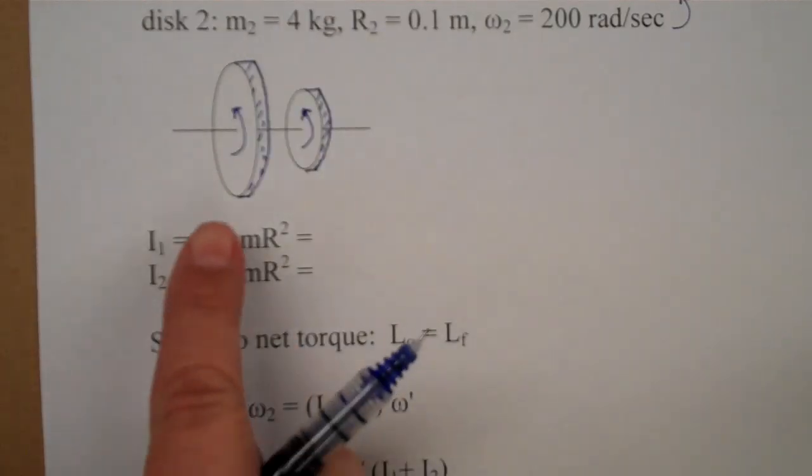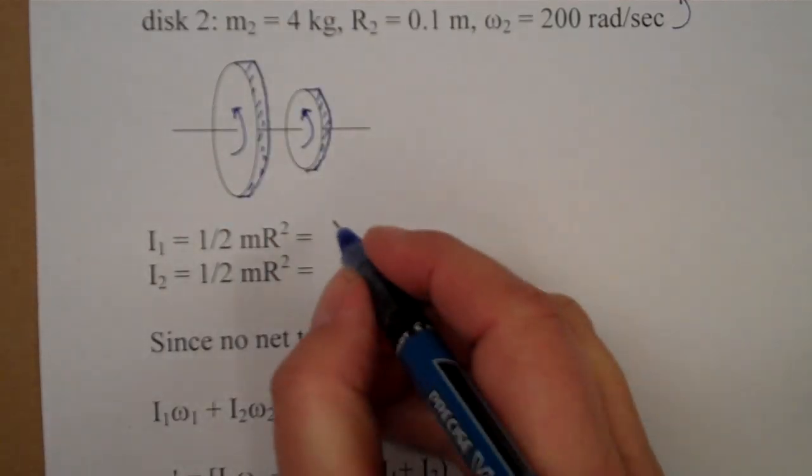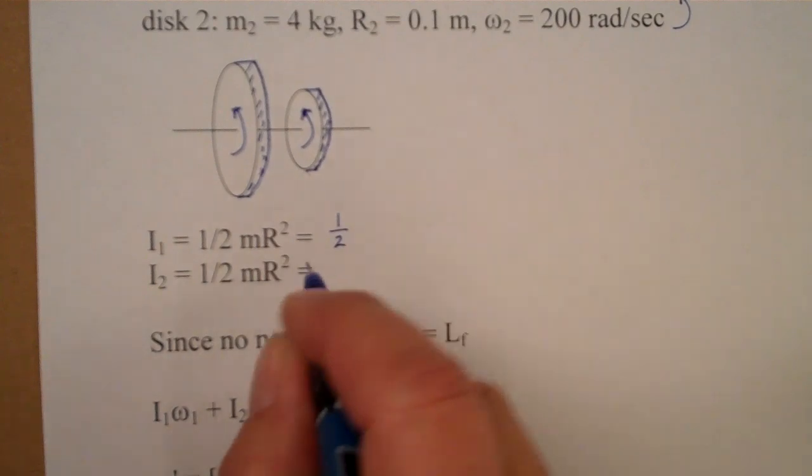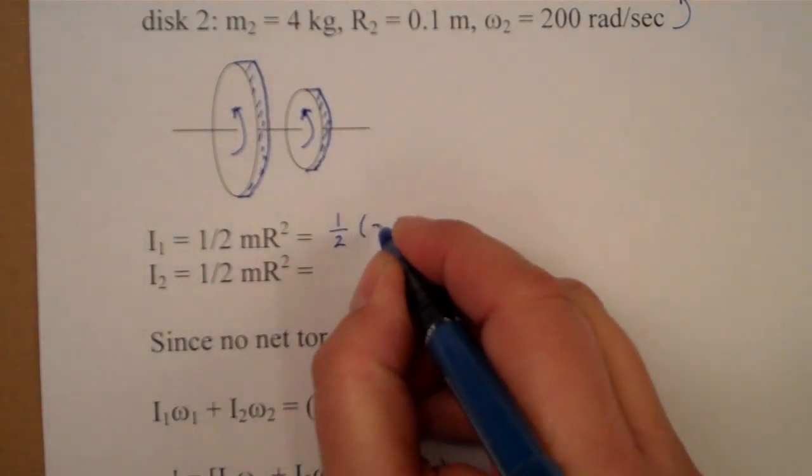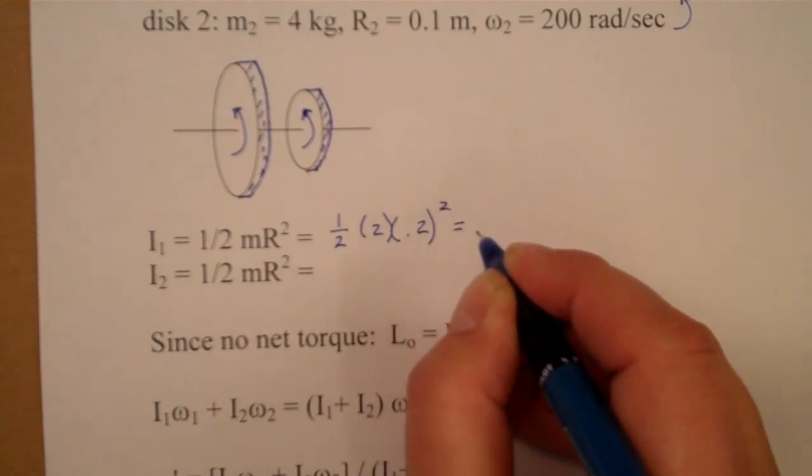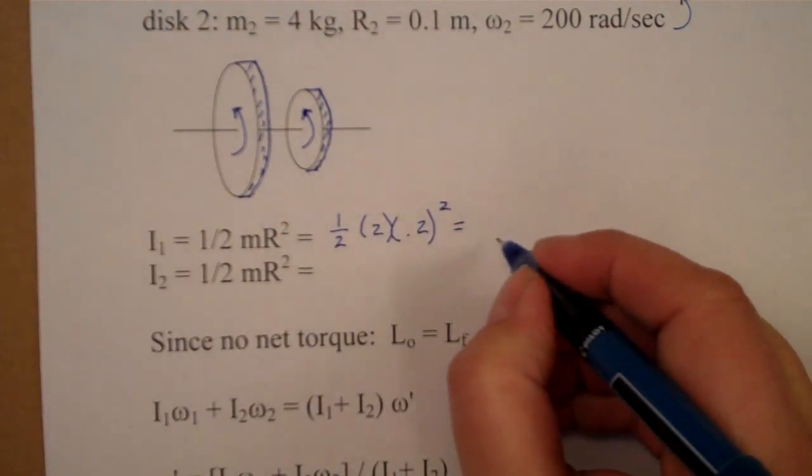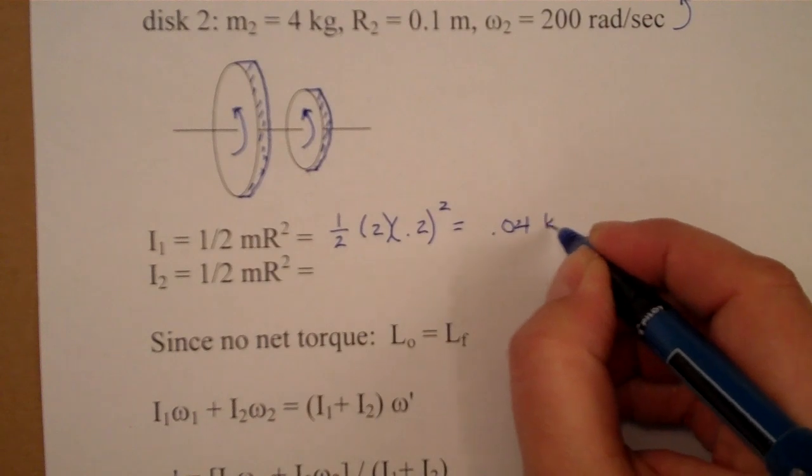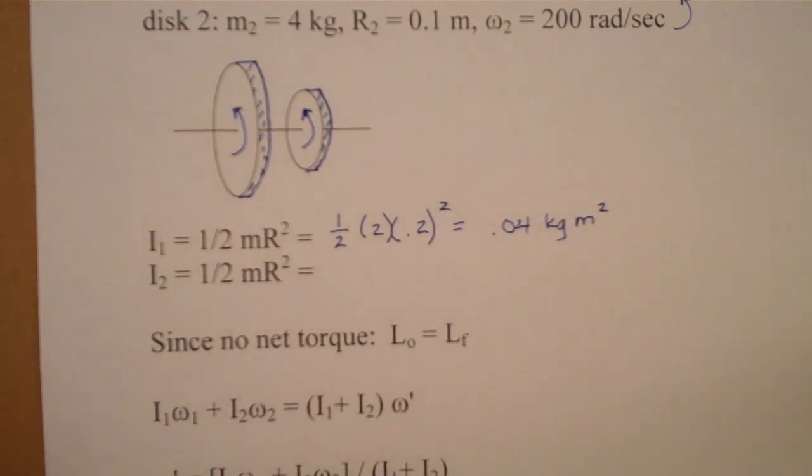the moment of inertia is 1/2 MR squared. We have the same picture, but our cylinder is vertical. So let's calculate the first one. It's going to be 1/2. Mass of 1 is 2 kilograms. Radius of number 1 is 0.2. Don't forget to square that, and that will give you 0.04 kilograms meters squared. So that's an indication of how difficult this is to rotate.